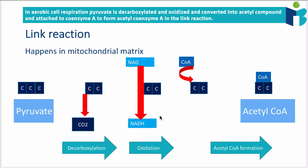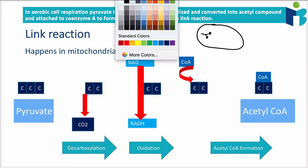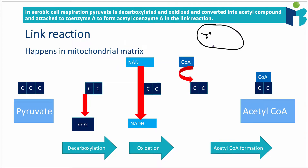It's important to understand where things are happening inside the cell. Glycolysis happens in the cytoplasm, and that applies to both aerobic and anaerobic cell respiration. The product of glycolysis in both cases is pyruvate. The link reaction happens inside the mitochondrial matrix — the mitochondria being the site of aerobic cell respiration — so before the link reaction can happen, the pyruvate molecule is transported into the middle of the mitochondrion.